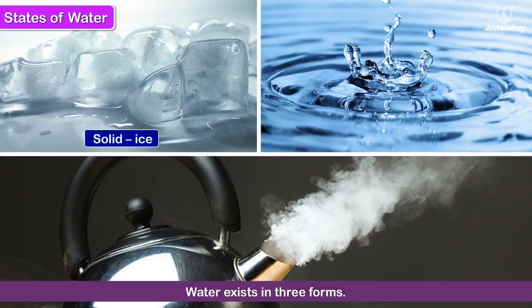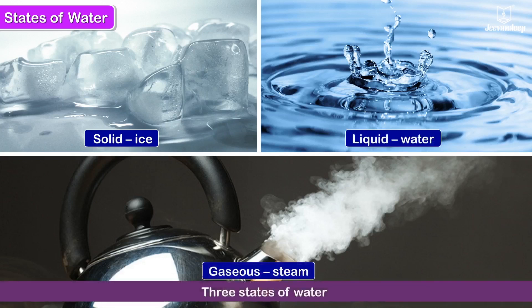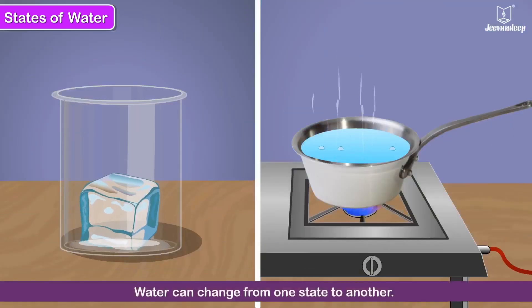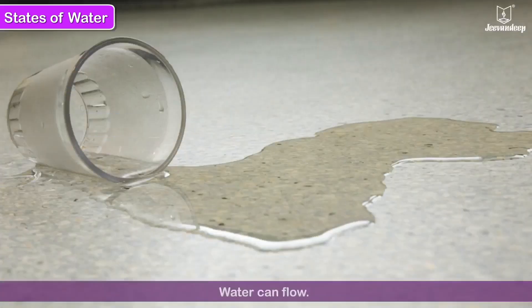Solid, liquid, and gaseous - these are called the three states of water. Water can change from one state to another. Water in the liquid form does not have a fixed shape and takes the shape of its container. It can flow.